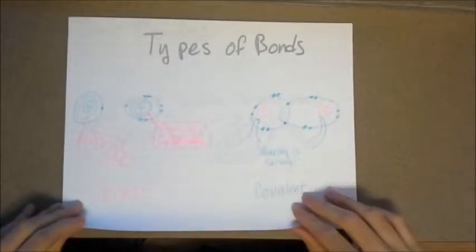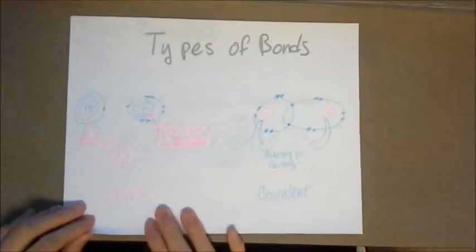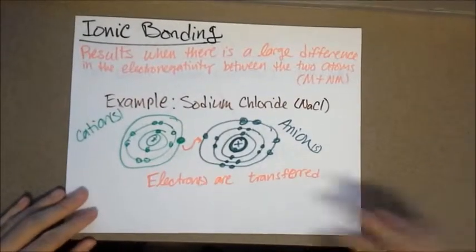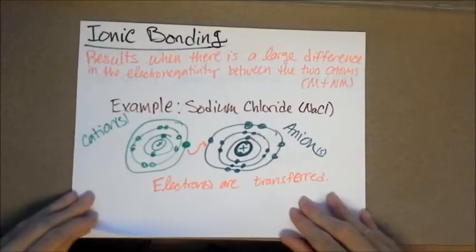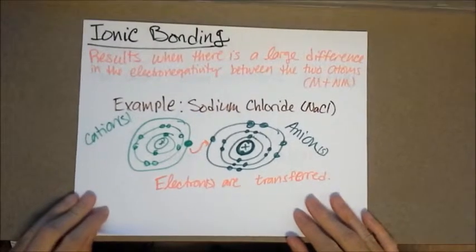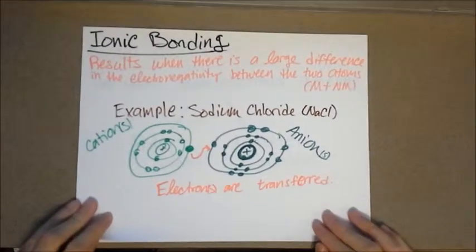So there are two types of bonds that we're going to look at. We're going to look at ionic bonds and then we're going to look at covalent bonds. Ionic bonding results when there's a large difference in the electronegativity between the two atoms. Generally, these bonds are going to occur between metals and non-metals.